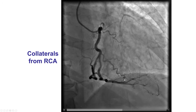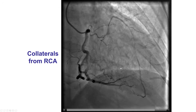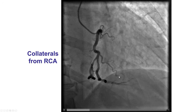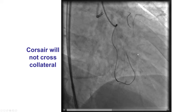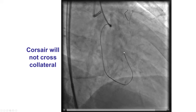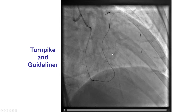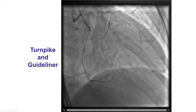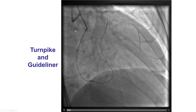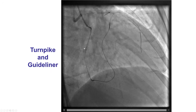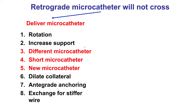This is an example of a patient with an LAD CTO and septal collaterals from the right coronary artery. The microcatheter could only be advanced to the middle segment of the septal collateral. But then after inserting a GuideLiner, the microcatheter could be delivered all the way to the distal true lumen. Extra support with a guide extension can improve the likelihood of advancing the microcatheter through the collateral.